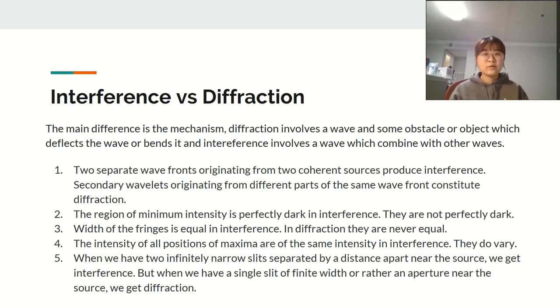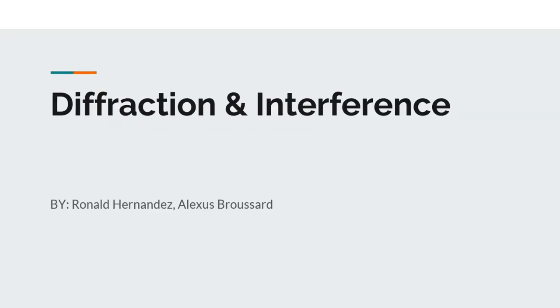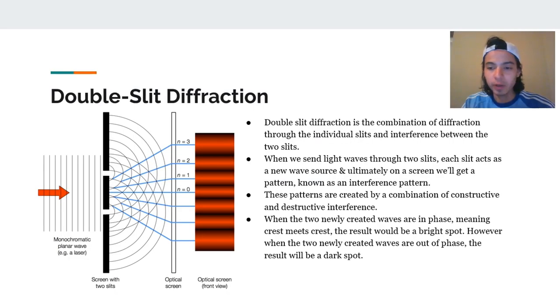This is all for my part and thank you for listening. My name is Ronald Hernandez. Today I am going to be talking about double slit diffraction. As mentioned earlier, interference occurs when two waves interact with one another. And based on their interaction, they can either constructively interfere or destructively interfere.